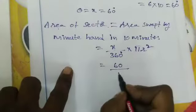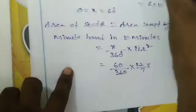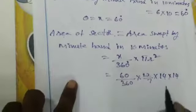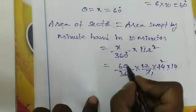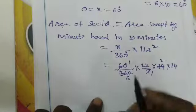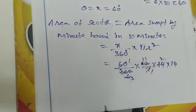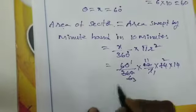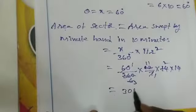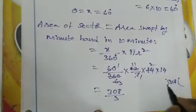Substituting: θ = 60°, π = 22/7, and r = 14 cm. So Area = (60/360) × (22/7) × 14 × 14. Cancelling 7 into 14 gives 2, then 60/360 simplifies to 1/6. This gives 22 × 14 / 3 = 308/3.